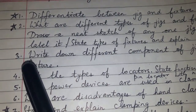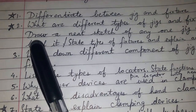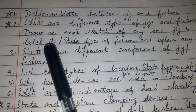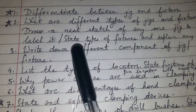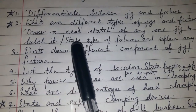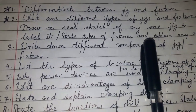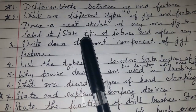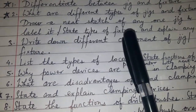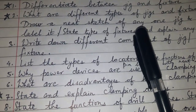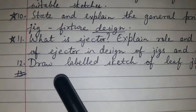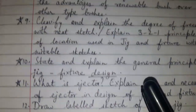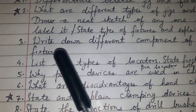In general, a question can be asked or a specific question such as: what are the different types of jigs and fixtures? Draw a neat sketch of any one jig and label it. State types of fixtures and explain any one. Once it was asked to draw a labeled sketch of a leaf jig.